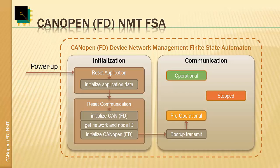If a device is configured for auto-start and set to self-switch into operational, then it goes straight into operational mode. Otherwise, it sits and waits in pre-operational mode until the network management master tells it what to do. The ways out of the communication block are via reset application or reset communication. The main difference is that reset communication resets only everything around the CANopen and CAN communication, while reset application is intended to reset the device as much as suitable — for a generic IO sensor this is typically done via a hardware watchdog reset.